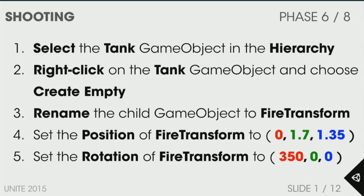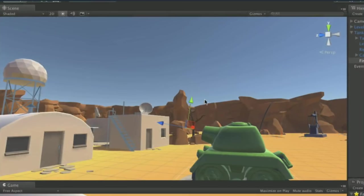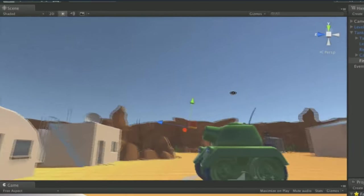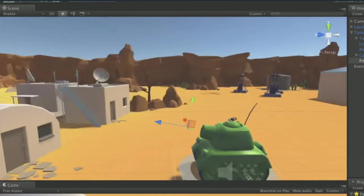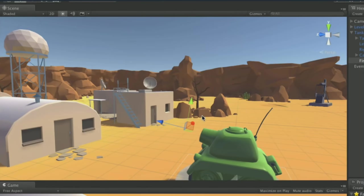To explain those values: the X position is 0 because the barrel is in the middle of the tank. It's 1.7 in the Y axis to position it up slightly, and forward in the Z axis to place it in front of the tank. If done correctly, it should appear just in front of the gun barrel at roughly the same angle as the artwork implies — forward enough that we're not creating the shell so it intersects the collider and detonates immediately.